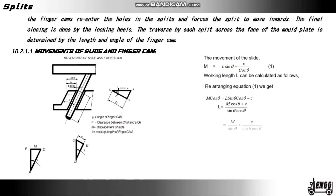Movement of a solid finger cam: the movement of the slide M is equal to L × sin θ − C / cos θ. Rearranging equation one: M cos θ = L sin θ cos θ − C. Therefore L = (M cos θ + C) / (sin θ cos θ), which simplifies to M / sin θ + C / (sin θ cos θ), which equals M / sin θ + 2C / sin 2θ. Therefore: L = M / sin θ + 2C / sin 2θ.